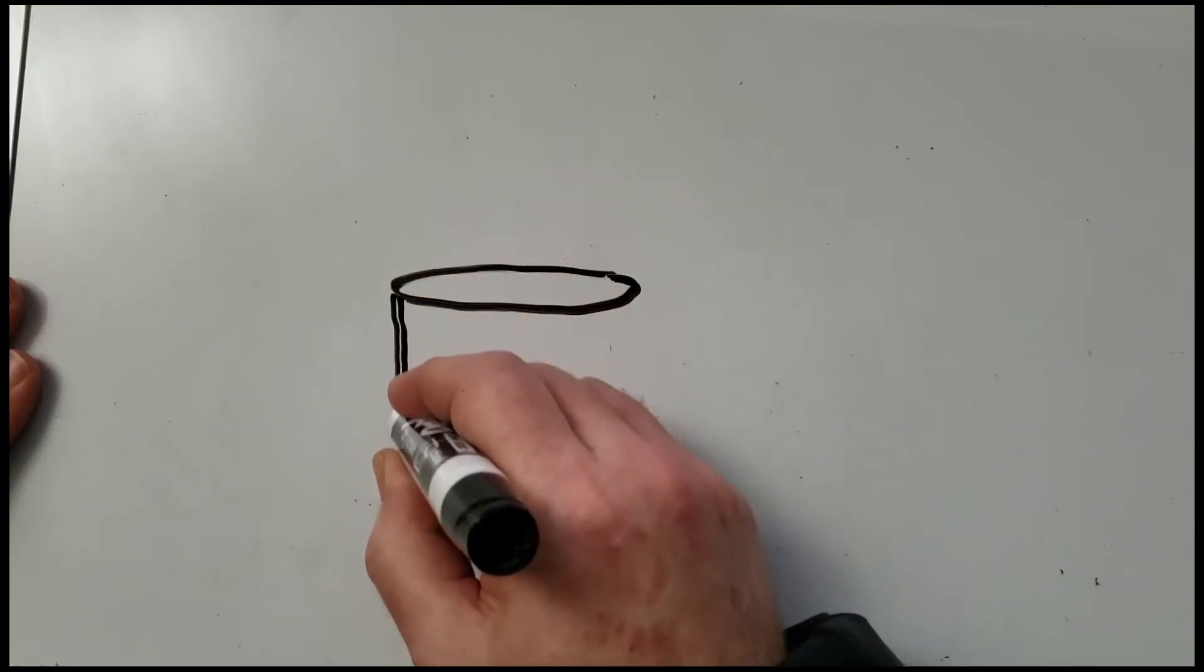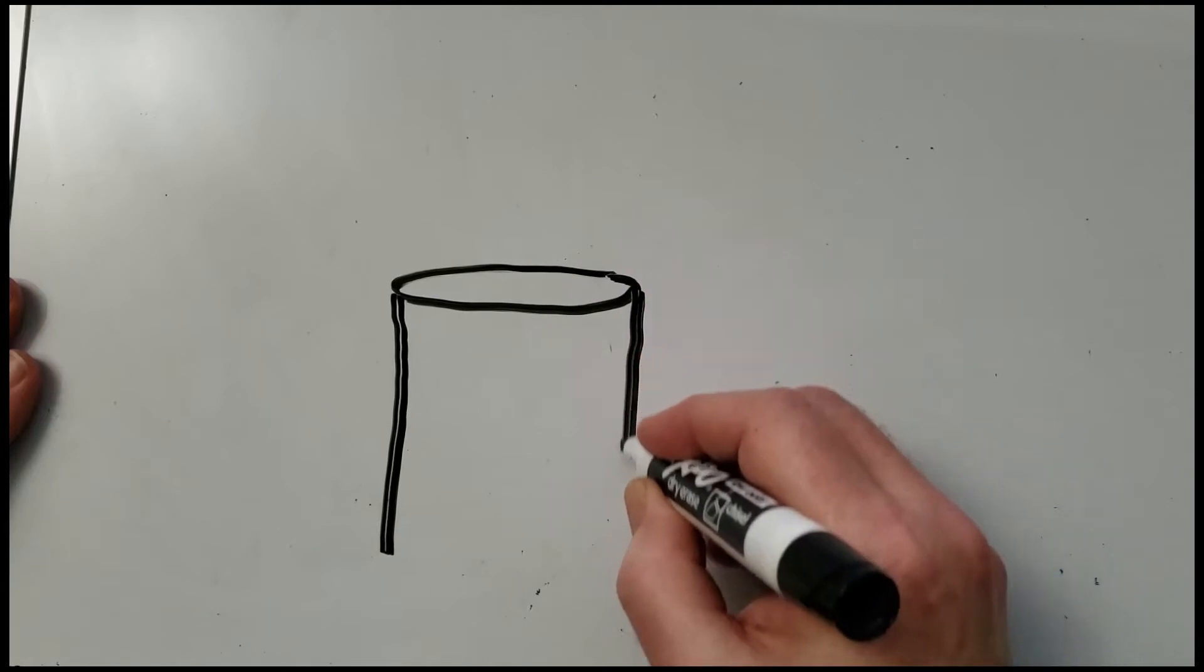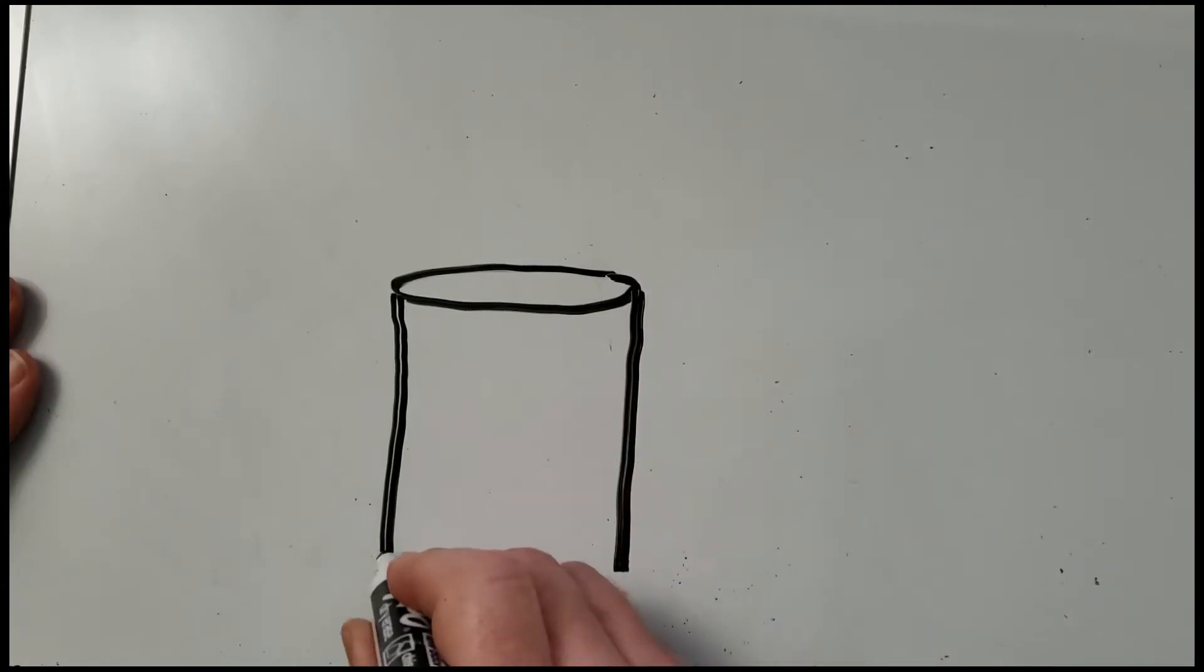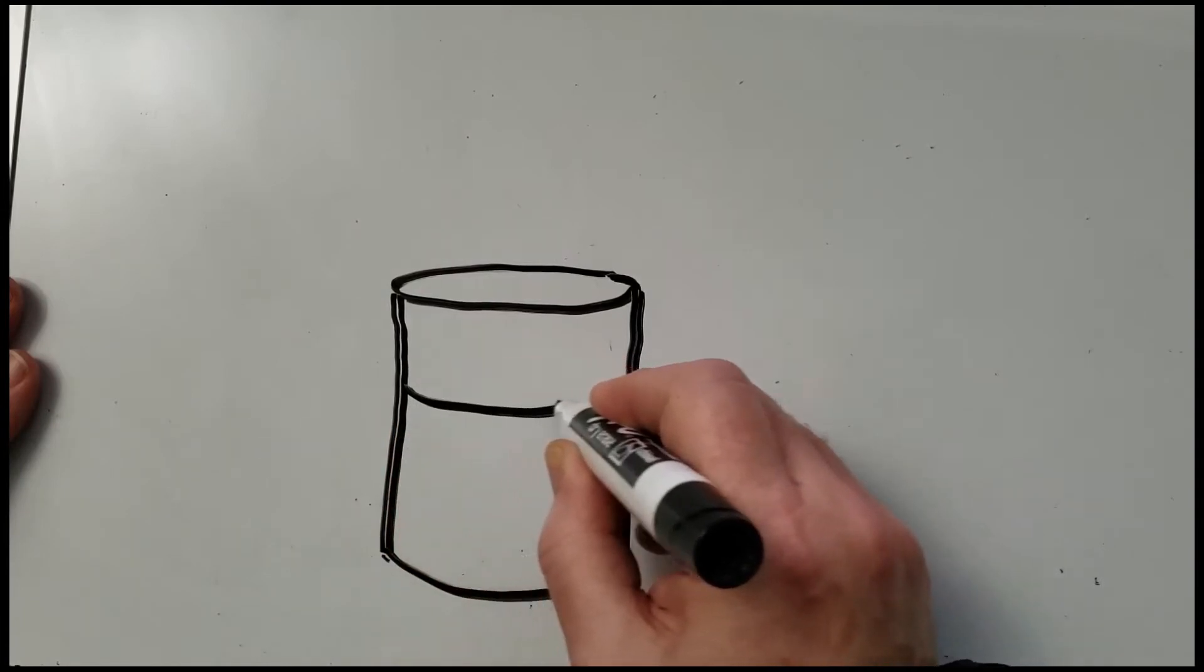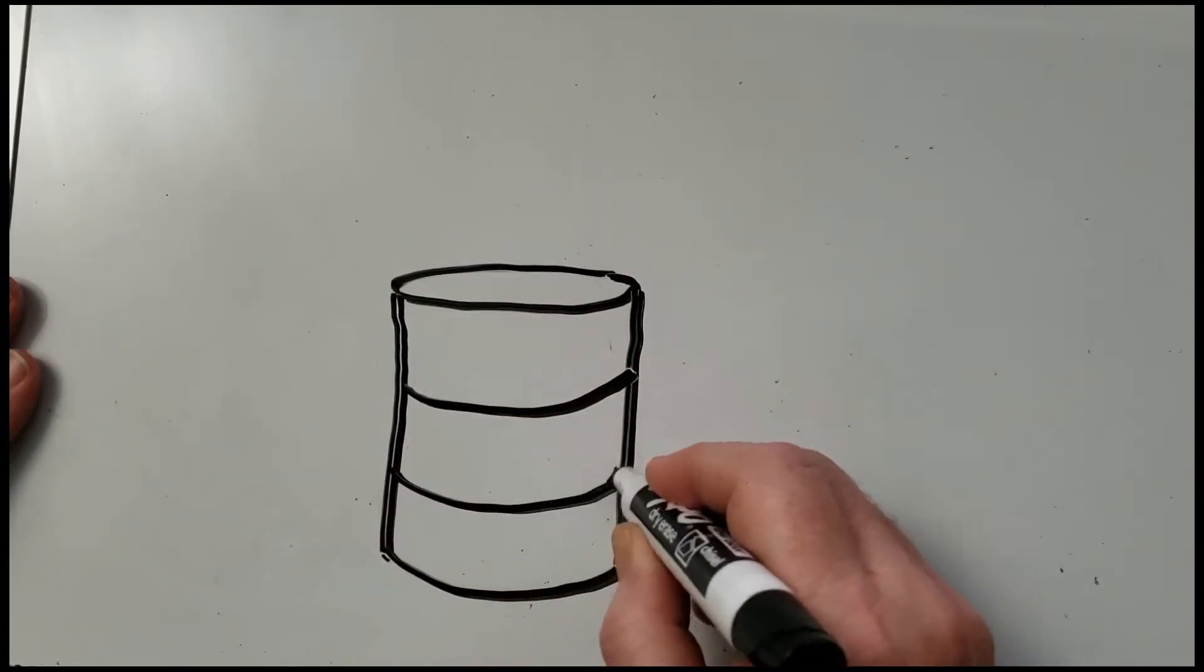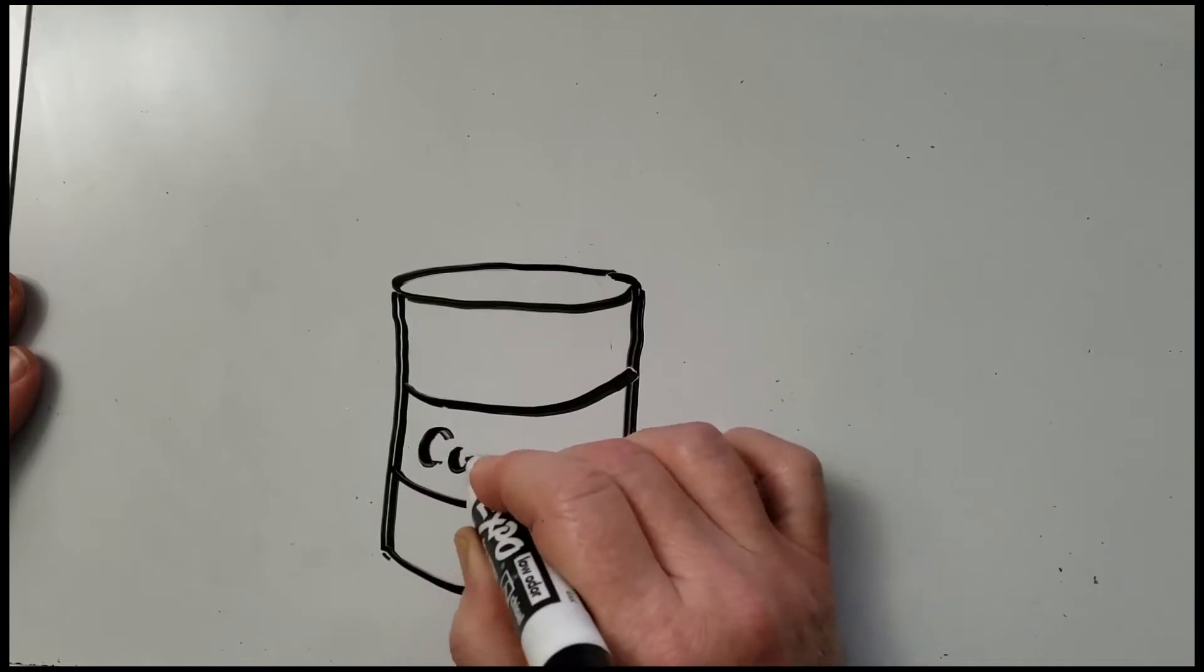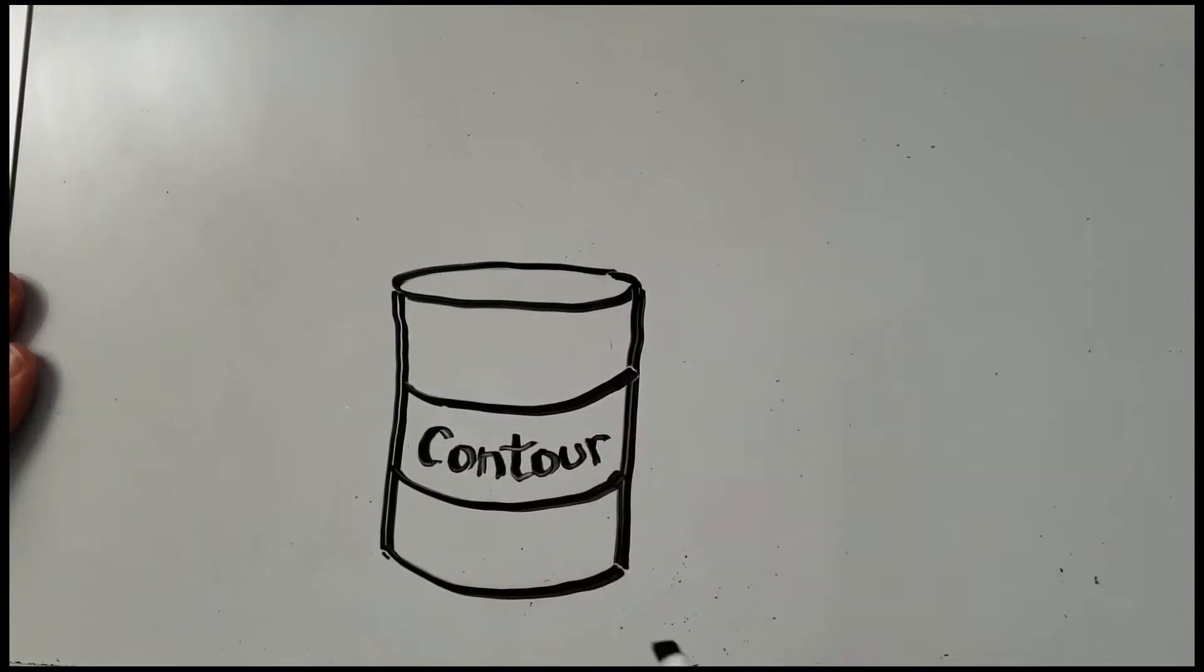I'm just going to pull down the sides, straight up and down, but I'm going to join the bottom with the smile. If I put a label on the can, I'm going to bend the lines so that I'm following the contour of the can.